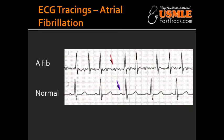Describe atrial fibrillation from an ECG. In atrial fibrillation, you see a chaotic and erratic baseline, irregularly irregular, with no discrete P waves in between irregularly spaced QRS complexes. What can be the end result of atrial fibrillation?